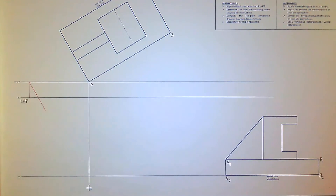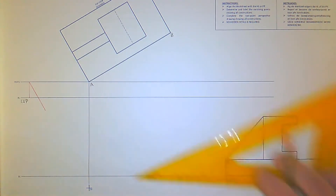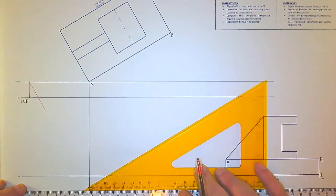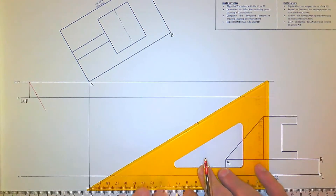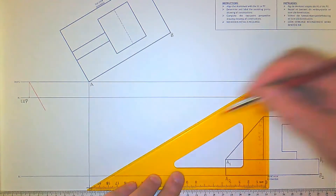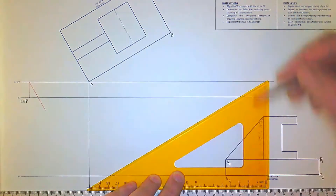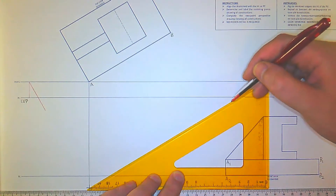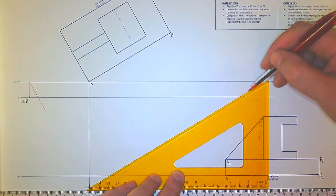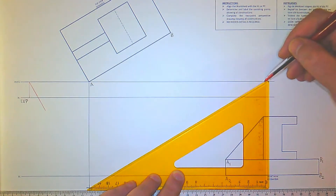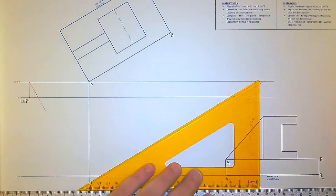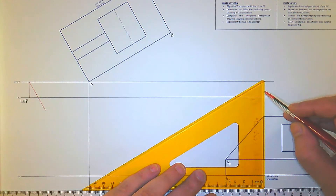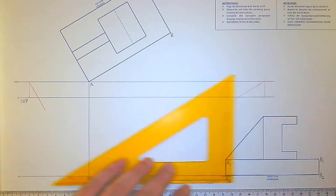For the other side, put your 60-degree set square down. Again, you don't want to draw the line all the way through — it's not technically wrong if you do, but just draw small parts of it on the right side. Then you go straight down towards the horizon line from the picture plane to find the right vanishing point.